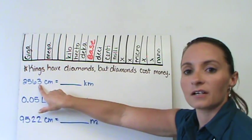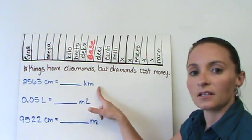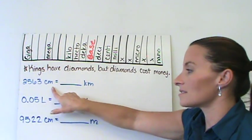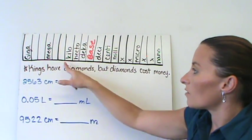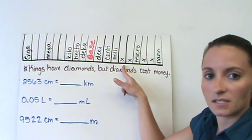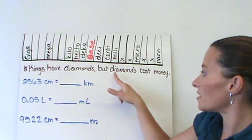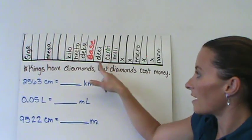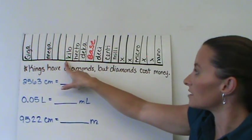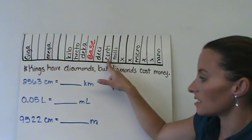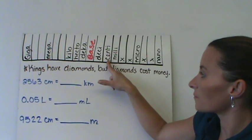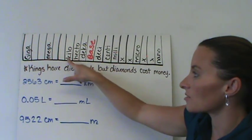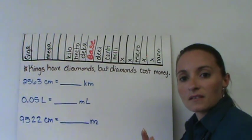Let's look at converting centimeters to kilometers. I have 2,563 centimeters. If I have my piece here - kings have diamonds, but diamonds cost money - and I want to move from centi to kilo, I need to figure out how many spaces I need to move. My centi is here, and I'm trying to move all the way to kilo. I'm going deci, base, deca, hecto, kilo. That's 5 places that I'm trying to move.